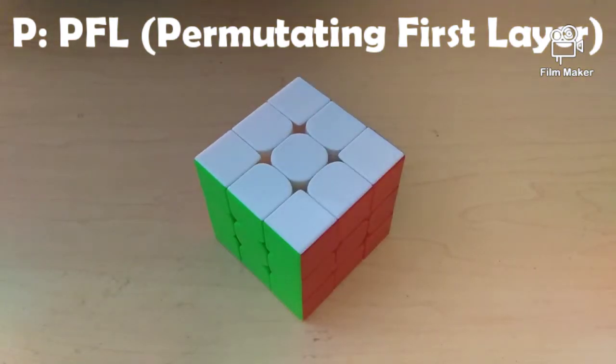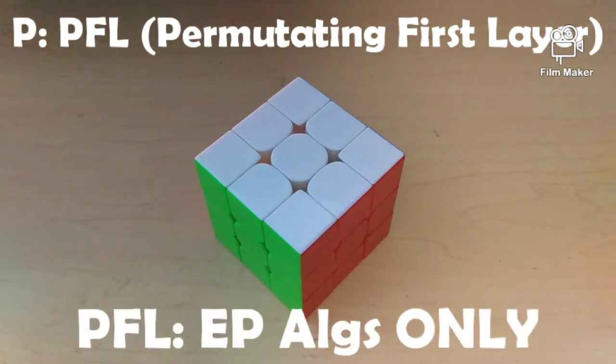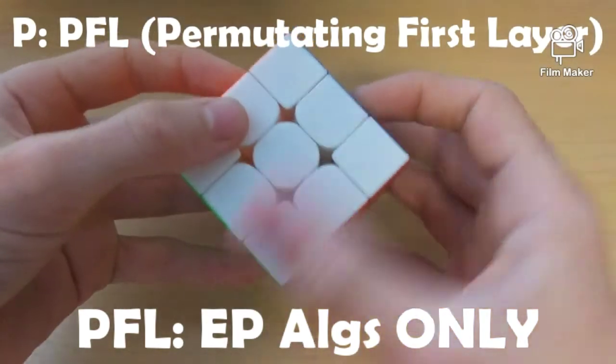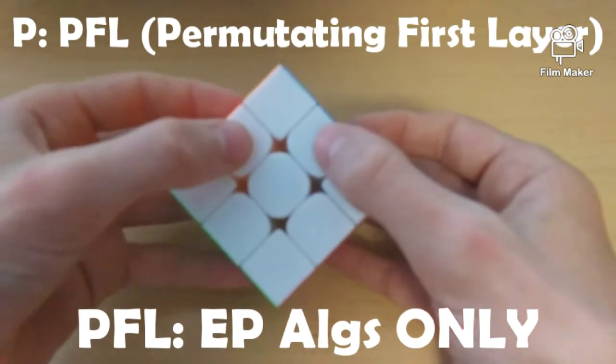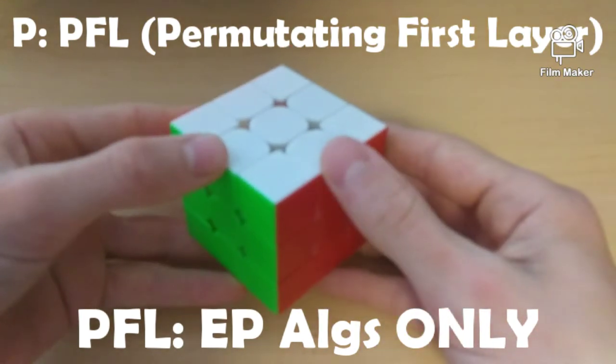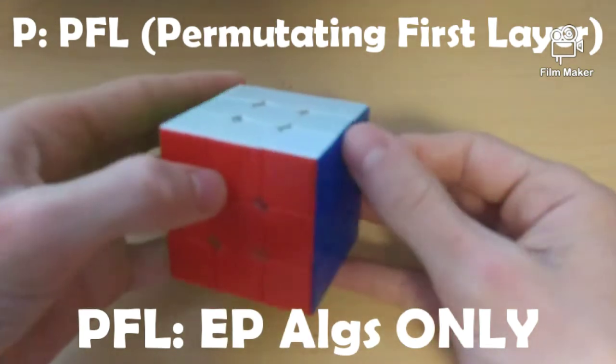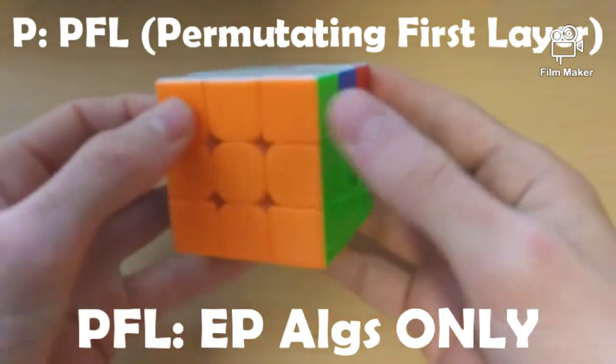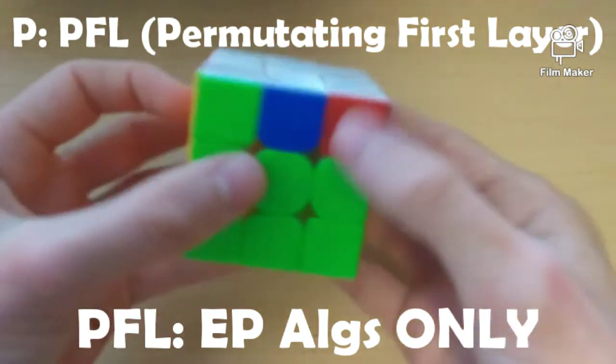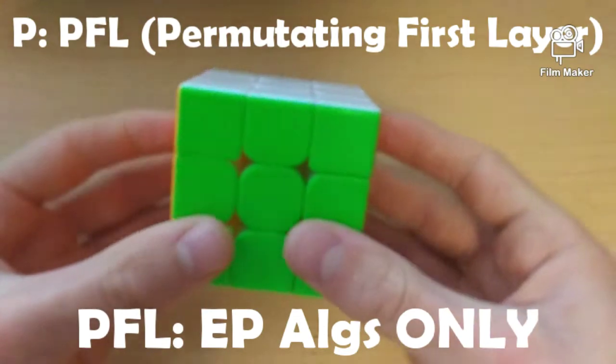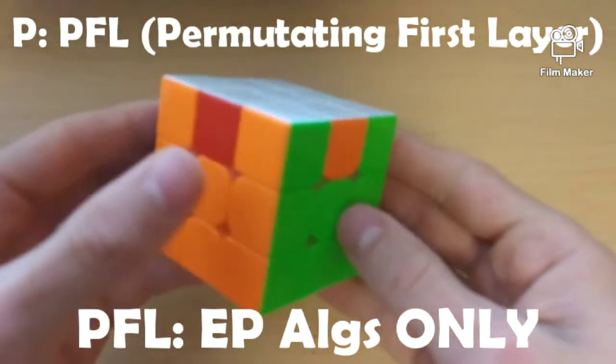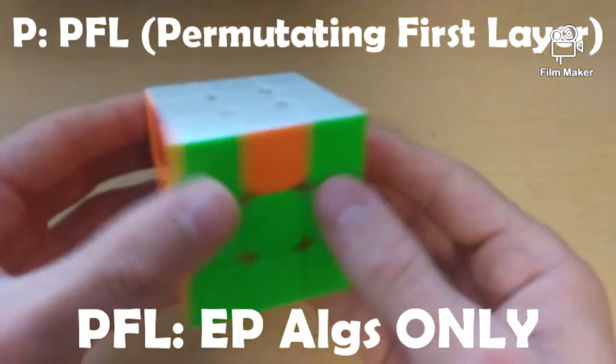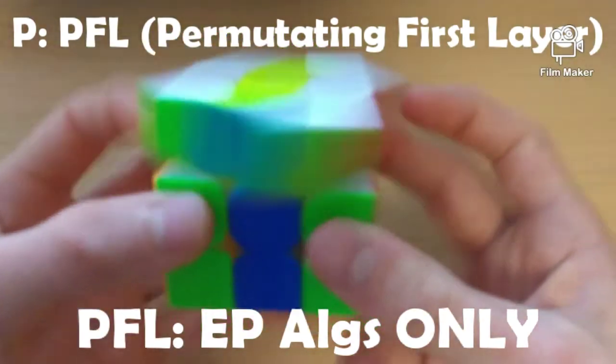Now, I just wanted to note that when solving the PFL stage, you will only ever get EP algs, or otherwise known as edge permutation algorithms. So, this is because whenever solving the cross, you are only messing with edges. So, just note that you will never ever get any corner permutation PLL algorithms, which is something like this, where you have to solve the corners. Because whenever solving a cross, you only use edges, you only get algorithms where you only ever have to permutate the edges.